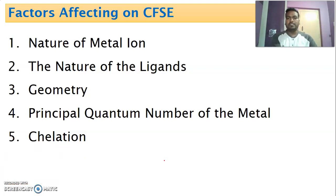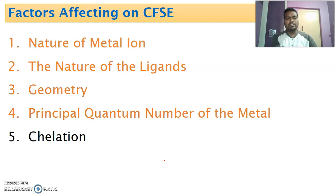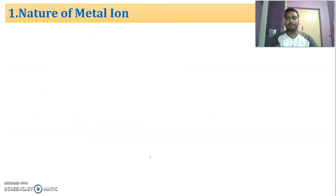The first factor is nature of metal ion, nature of ligand, and geometry of the coordination complex, principal quantum number of the central metal ion, and chelation. These are the important factors that affect the stability of coordination complexes. Let us see them one by one.